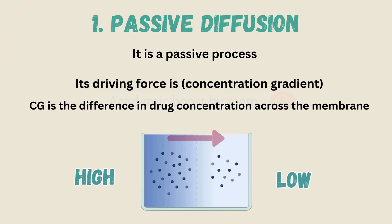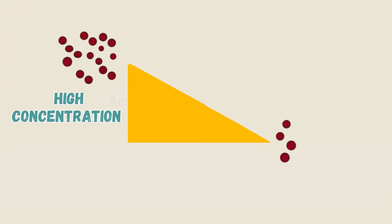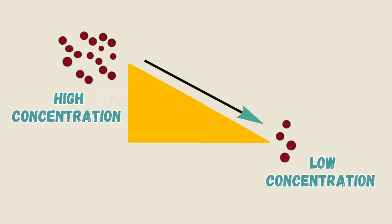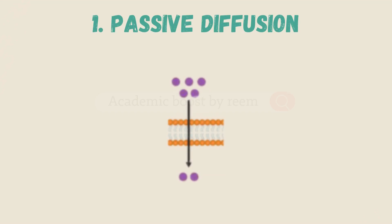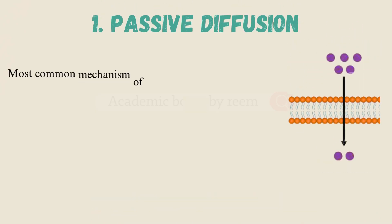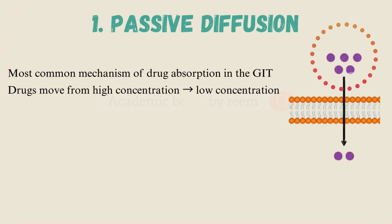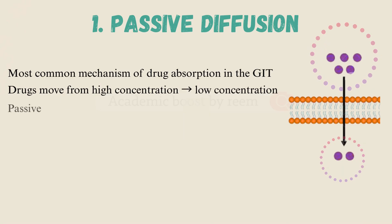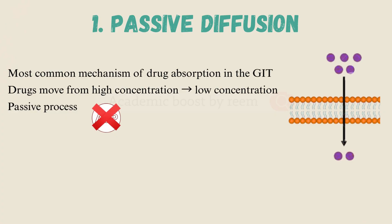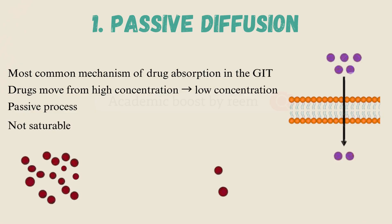The net movement will be from high to low concentration spontaneously — think of it as a slide where high concentration is on top and low concentration at the bottom. To sum up: passive diffusion is the most common mechanism of drug absorption in the GIT. The drug moves from high to low concentration, it's a passive process so no ATP is needed, it's not saturable — meaning as long as a concentration gradient exists, movement continues — and it works best for lipid-soluble, small, non-ionized molecules.